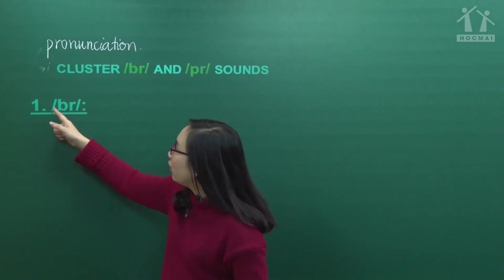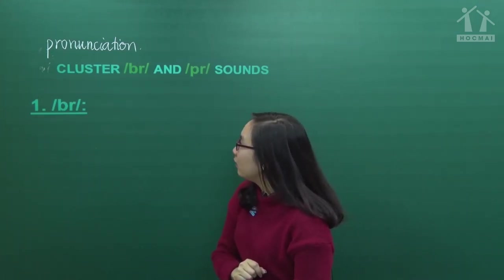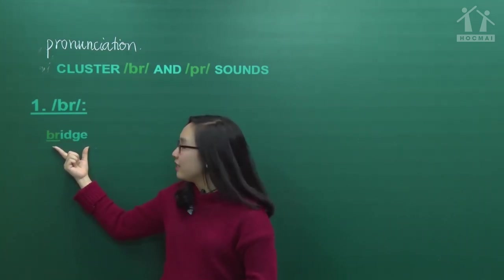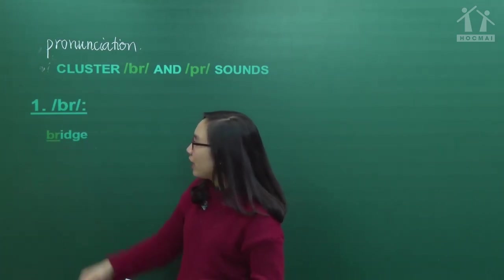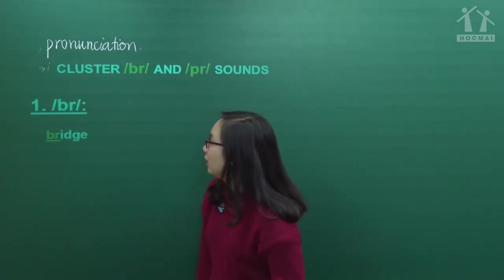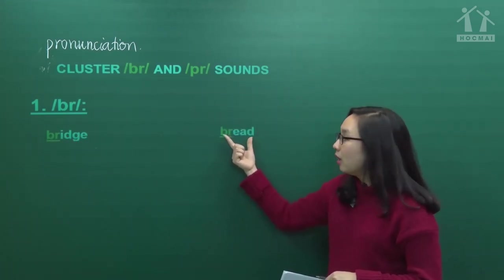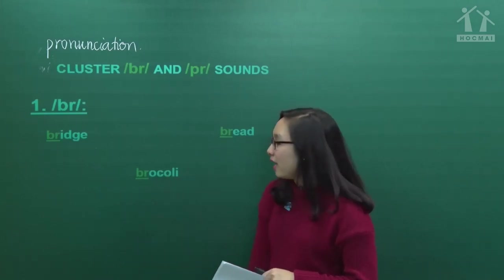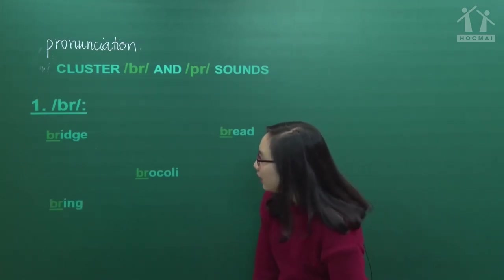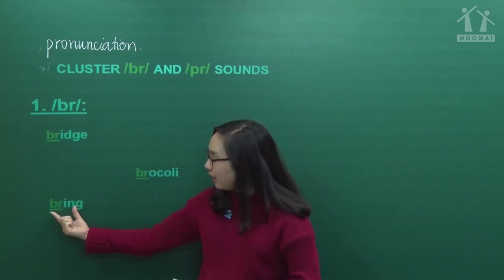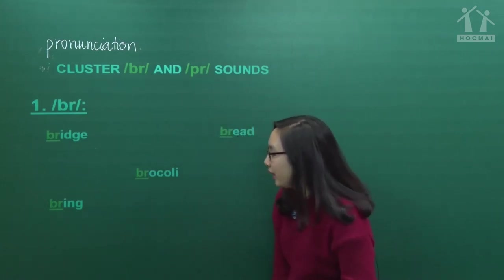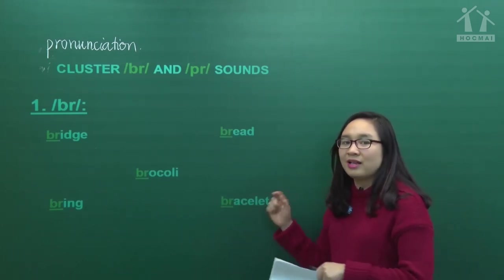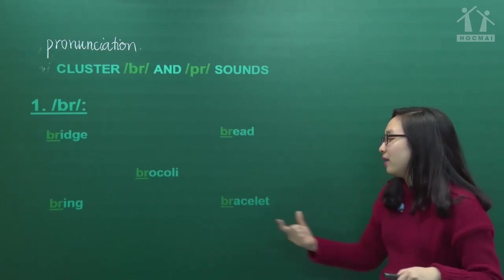Sound 1: 'br'. First word: bridge - cây cầu. Next: bread - bánh mì. Broccoli - súp lơ. Bring - động từ mang. And bracelet - vòng đeo tay.